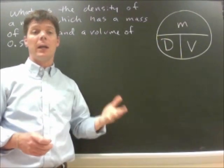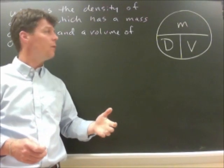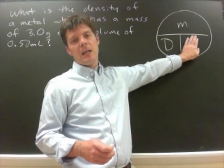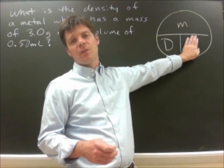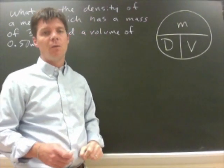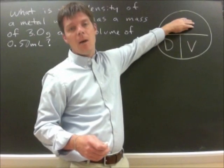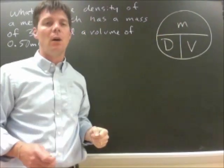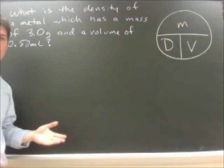For example, if we want to solve for volume, we would cover the V. Volume would be equal to mass divided by density. If I wanted to solve for mass, I would cover the m and I would find that mass is equal to density times volume.